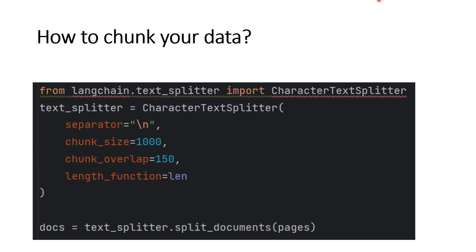After this stage, you need to chunk your data. For this purpose, you can use CharacterTextSplitter from langchain.text_splitter. You specify input arguments for this text splitter, including the chunk size, the chunk overlap, and the separator, which is the newline character. This way you can chunk your input text into different smaller chunks of the specified length. Then you use the split_documents function of this text splitter to chunk your pages into smaller pieces.